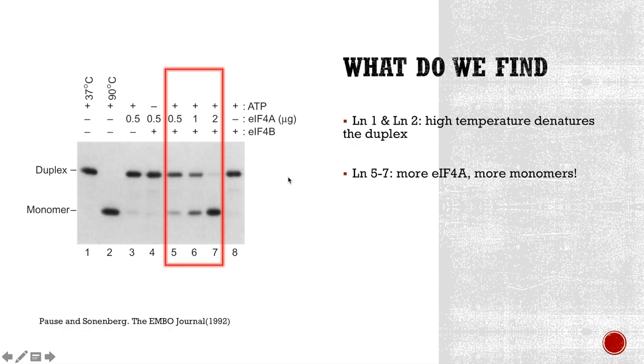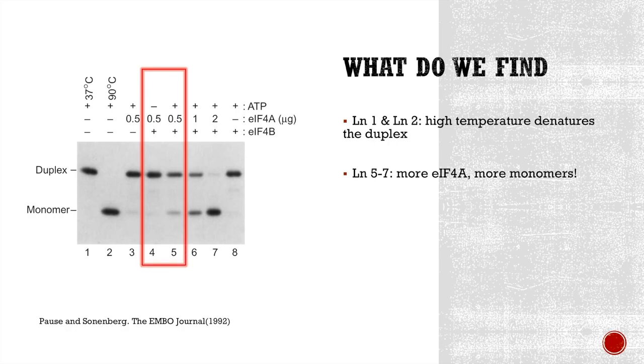So, it seems that EIF4A plays an important role in unwinding RNA. Is ATP or EIF4B necessary in this activity as well? Let's look at lane 4. Comparing lane 4 with lane 5, the only difference is that lane 4 does not have ATP, and we don't see a band on the monomer location. This indicates that this helicase needs ATP.